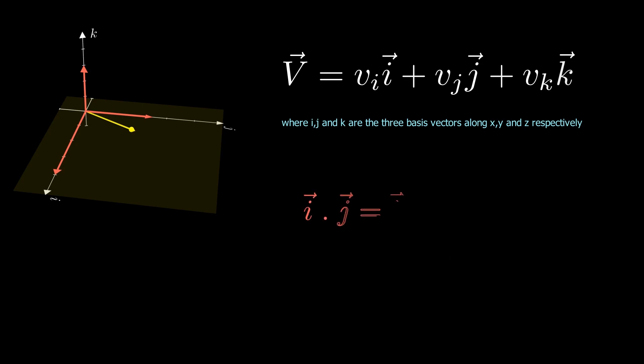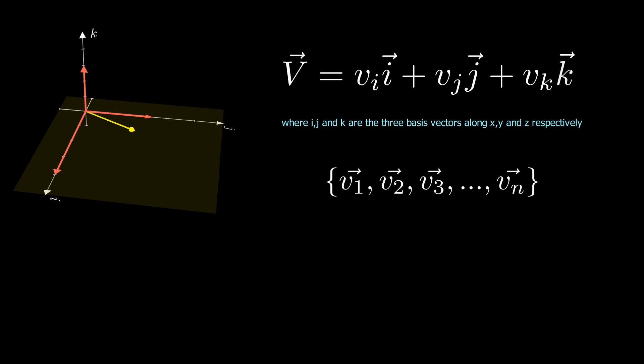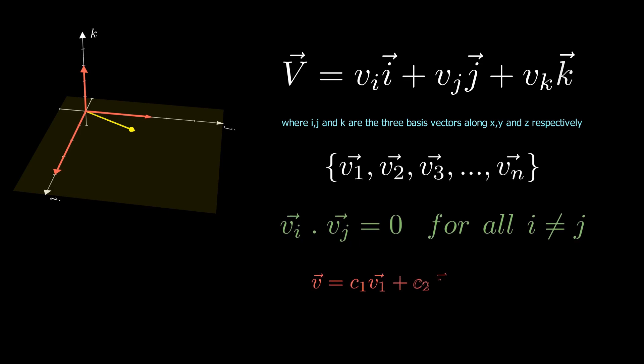The basis vectors are orthogonal or perpendicular to each other, meaning that the dot product of any two different vectors in the basis set is equal to zero. This is the condition for orthogonality. A set of vectors are said to be orthogonal if the dot product of every two vectors within that set is zero, and any vector can be represented as a weighted superposition of these orthogonal vectors.